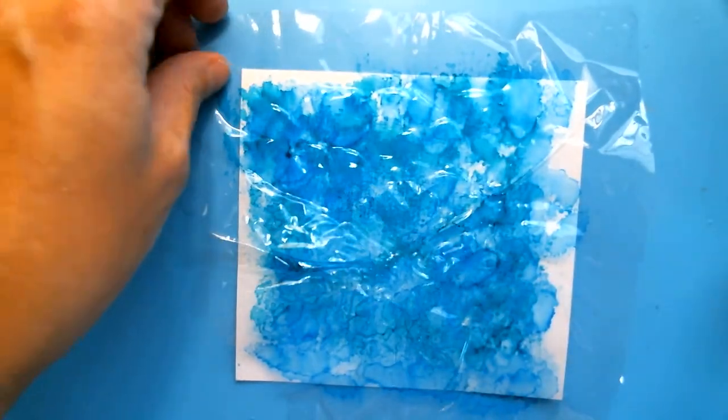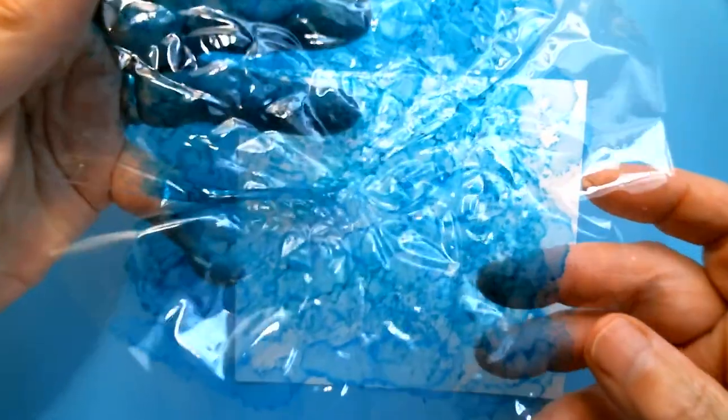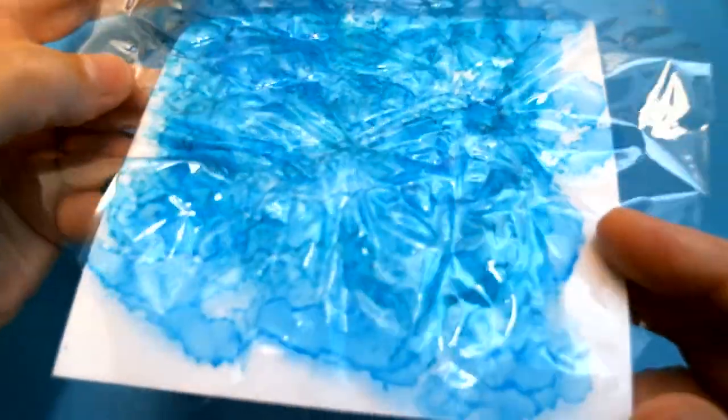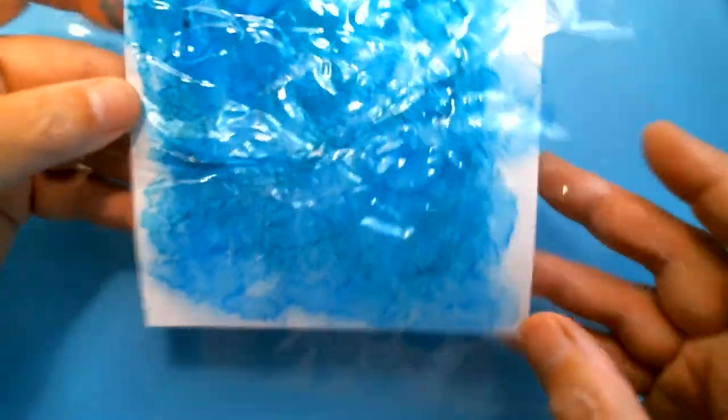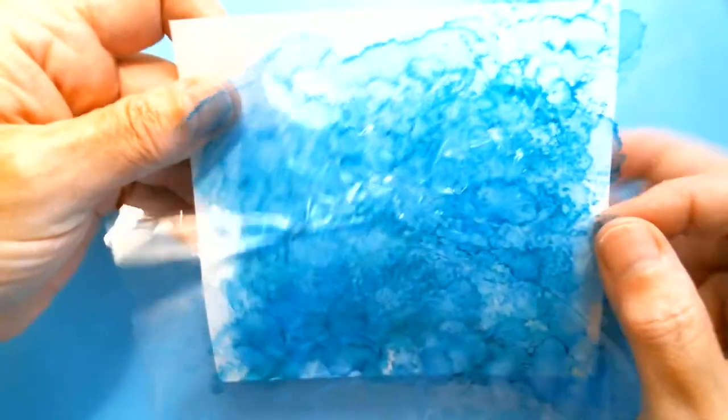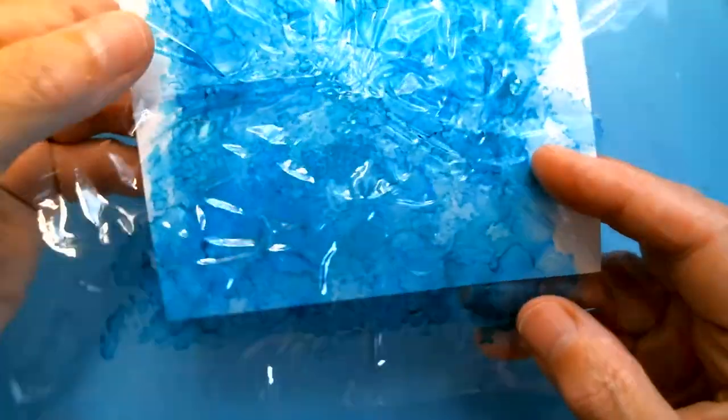And I'm happy with that. And if I can get a close-up, you can see all of the pools and the wrinkles there. You would turn it so that the alcohol ink section was face down to the card.